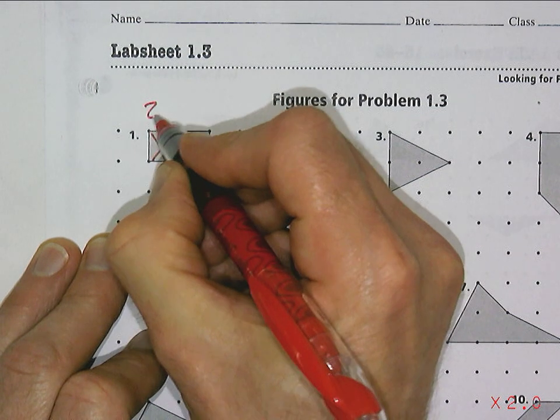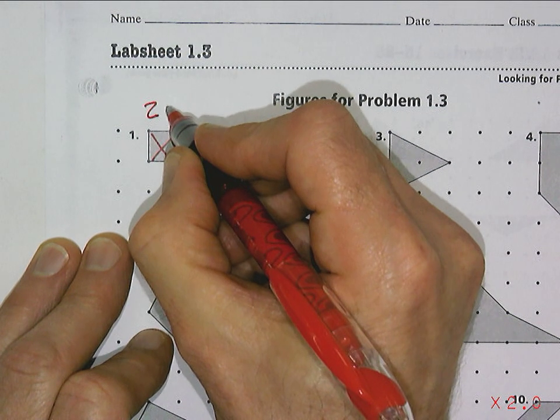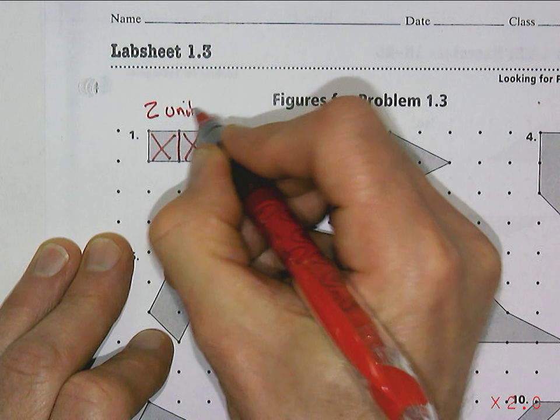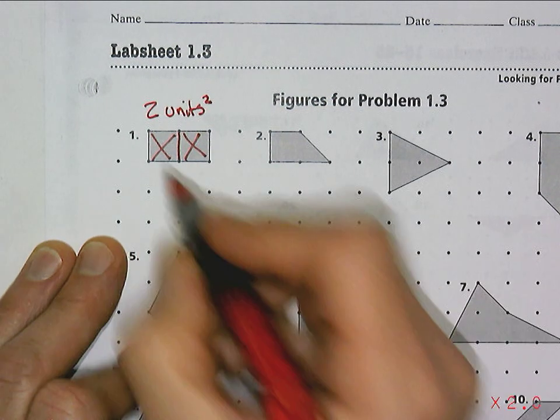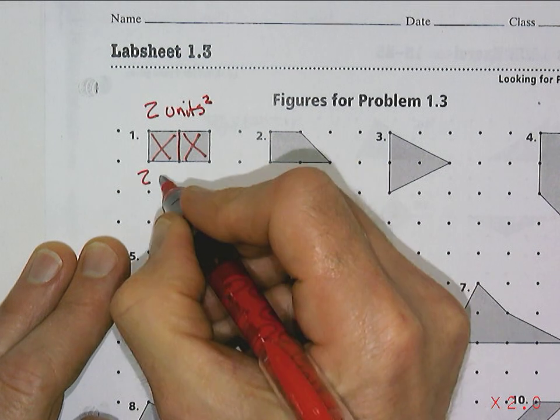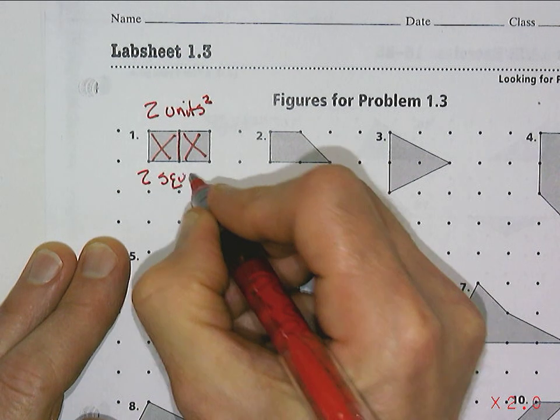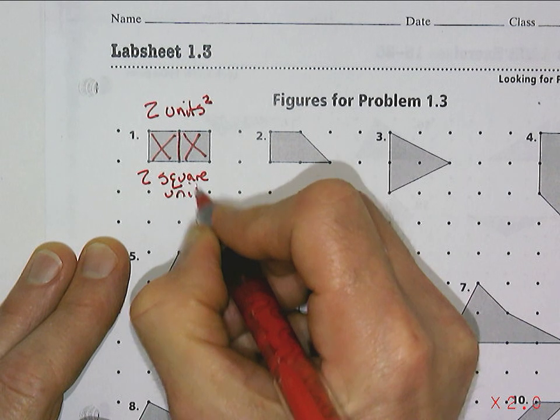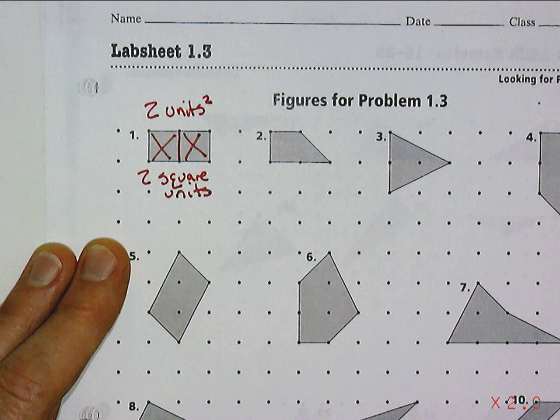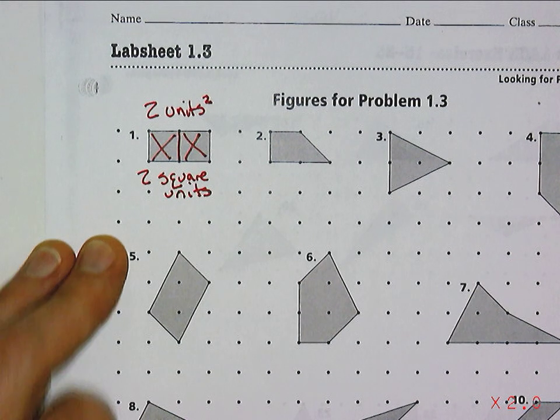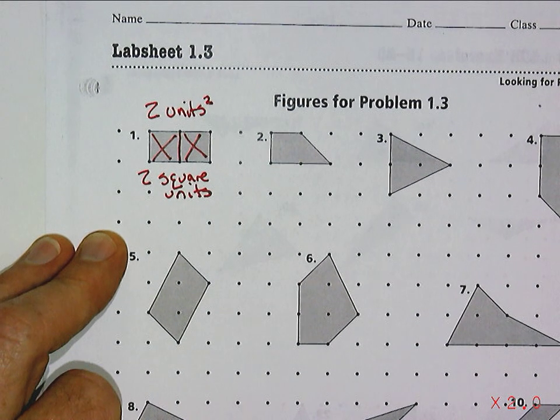This would be two square units or units squared. We could write it like that - two square units, if they were centimeters or feet or whatever the units are. So, two square units.